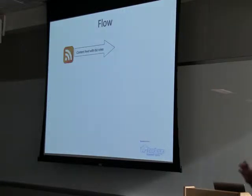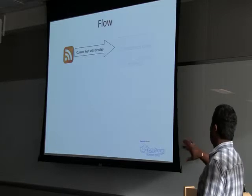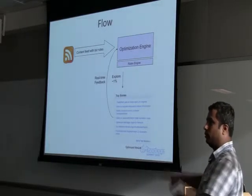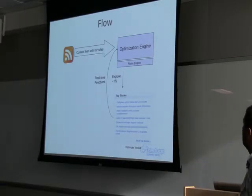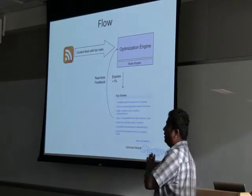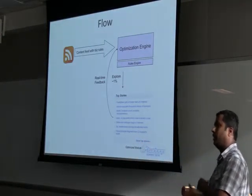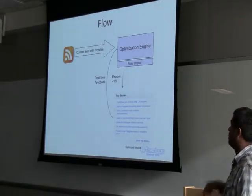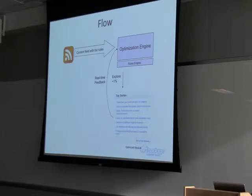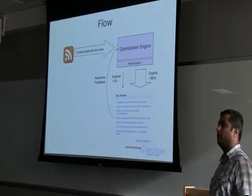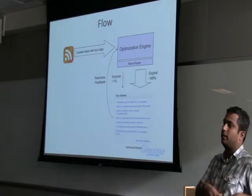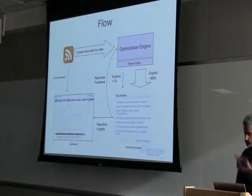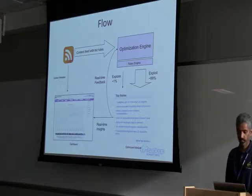The general flow of the whole optimization process is: we have a bunch of content that comes in, it gets into the optimization engine. We split the traffic into a small percentage and figure out how a new story is performing. We explore it on a small percentage, get real-time feedback, and then exploit it on the rest — 99% of the traffic — essentially telling the system these are the good stories and this is how we should be showing it to the rest of the world.